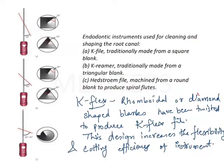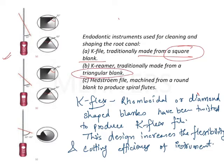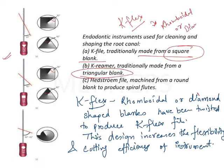Endodontic instruments used for cleaning and shaping the root canal: the K file is traditionally made from a square blank. The reamer is made from a triangular blank. The K flex is made from a rhomboidal or diamond-shaped blank. You should know the shapes — the cross-section of each instrument.